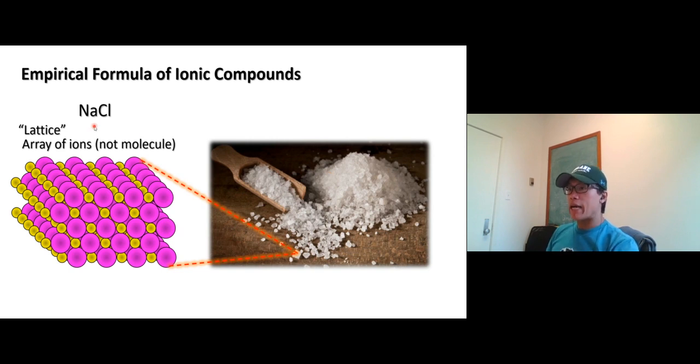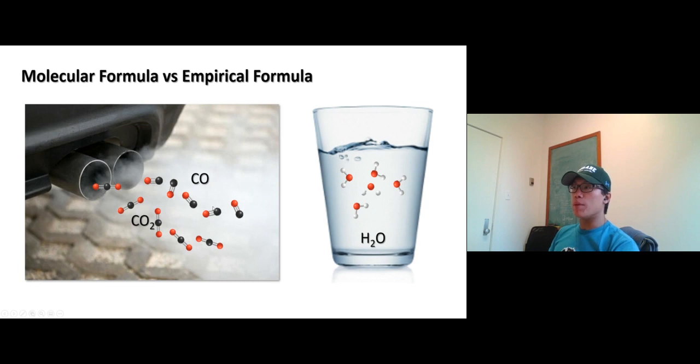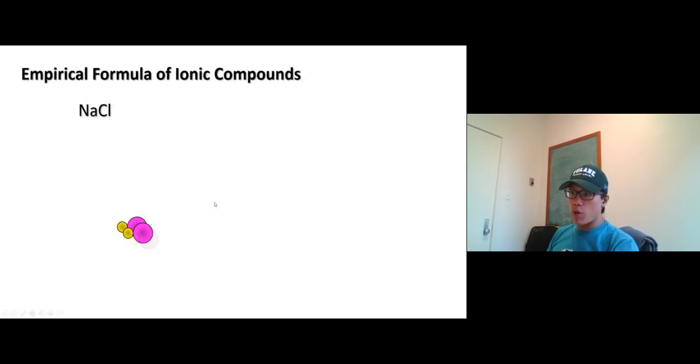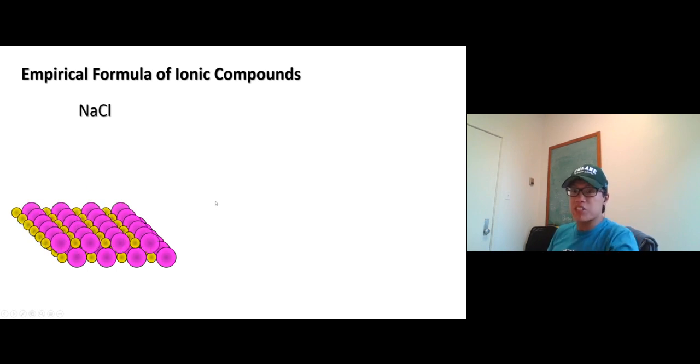So ionic compounds exist as an array of ions called lattice. Write this word down somewhere. We'll come back to the word lattice later. If you want to compare to covalent compounds, we use the molecular formula to represent an actual number of each atom in the molecule. But you can't do that with sodium chloride. Sodium chloride stays in an array of ions called lattice. There are too many of them.